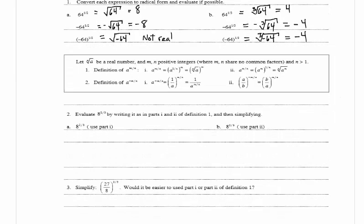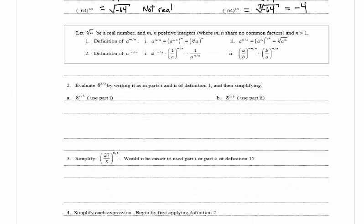Let the nth root of a be a real number and m and n be positive integers where m and n share no common factors and n is greater than 1. Definition of a raised to m over n, part 1: a to the m over n equals a to the 1 over n all raised to the m, which is also equal to the nth root of a all raised to the m. Part 2: a to the m over n equals the nth root of a to the m.